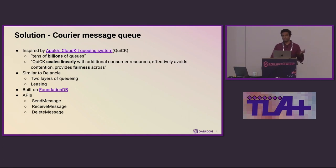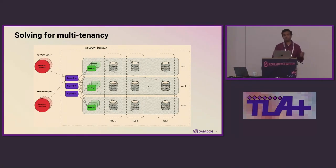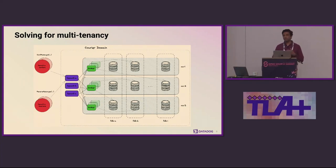My team and I decided to build a second iteration of this system using FoundationDB at the storage layer, exposing simple APIs for sending, receiving, and deleting messages. We called this new system Courier. To solve for multi-tenancy, we backed it by multiple FoundationDB clusters — initially eight clusters — and each tenant would be sharded into four of these clusters such that no two tenants shared the same four. A broker layer exposed gRPC APIs that clients connected to, with all sharding logic in the brokers. The brokers also performed health checks on FoundationDB and would exclude unhealthy clusters.